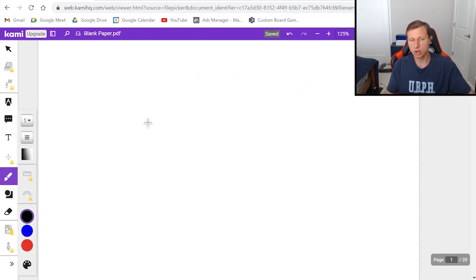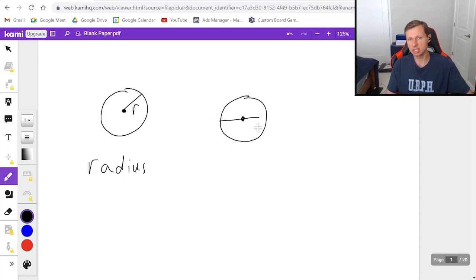And the second two things we need to talk about are radius and diameter. So radius is defined as the distance to the center. We usually call it R, stands for radius. And then the diameter is going to be the same idea, except it's the entire line through the center of the circle. That's diameter. And the relationship between radius and diameter is that 2R is equal to D, the diameter.